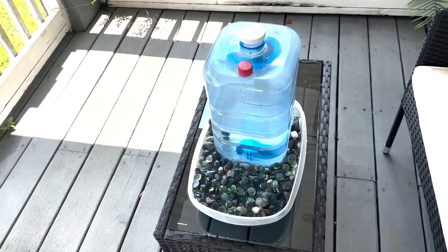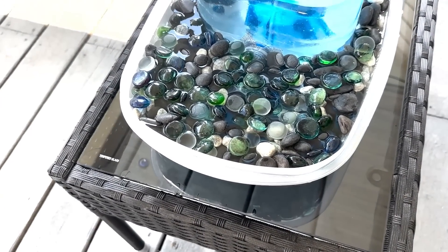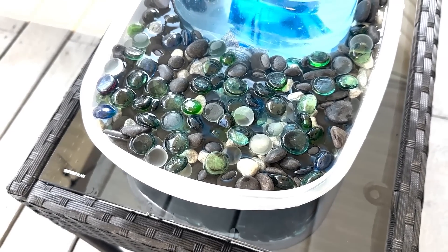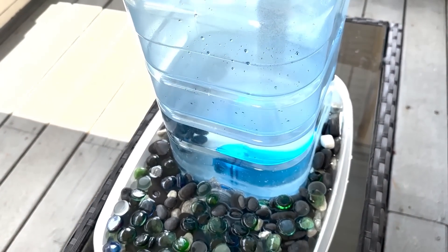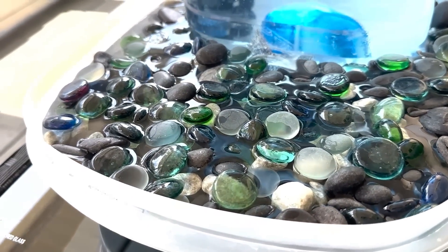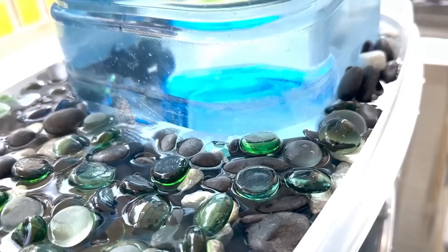Please note that as you add the stones and marbles to your station, the water level will rise. You can pour out some of the water and ideally have the water level right at the top of the bottom cap. Most of the stones and marbles should be above the water level to maximize the amount of bees that can drink from your station.